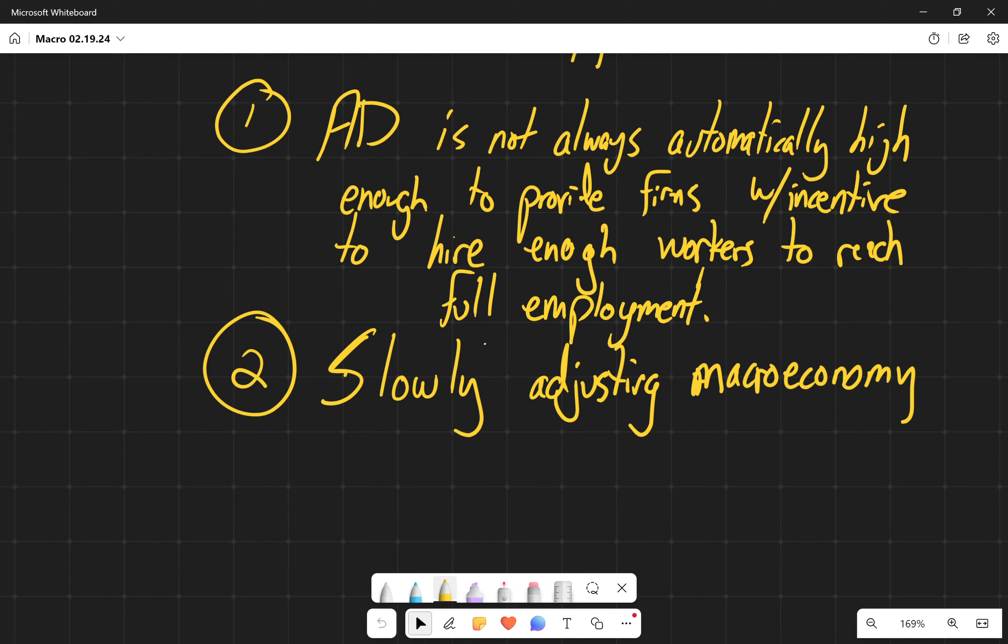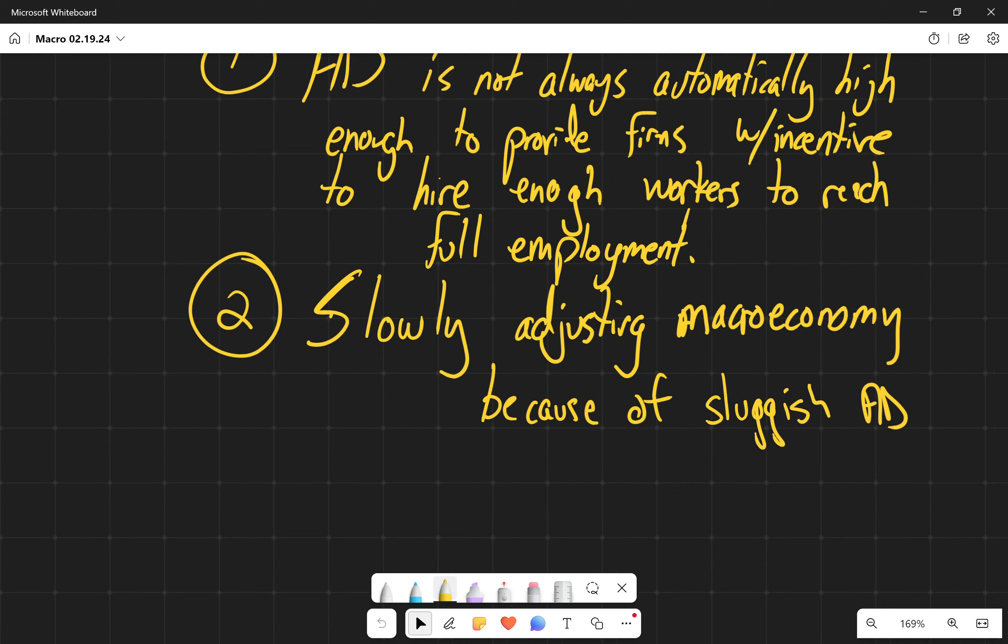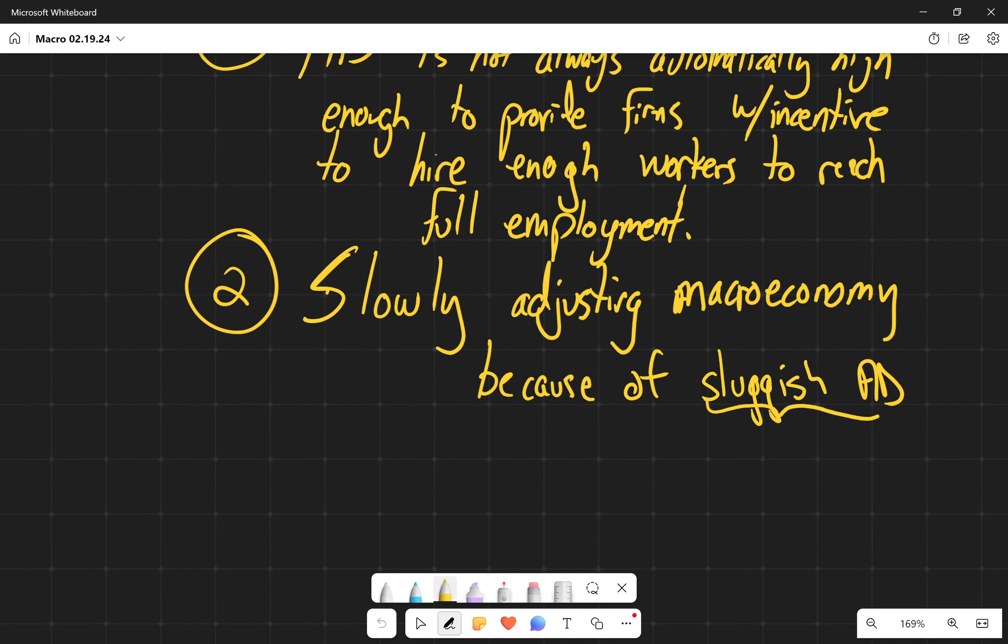So slowly adjusting macroeconomy because of essentially a sluggish aggregate demand curve. And the reason why we have a sluggish aggregate demand curve is this thing called sticky wages and prices, which we'll talk about in a second.